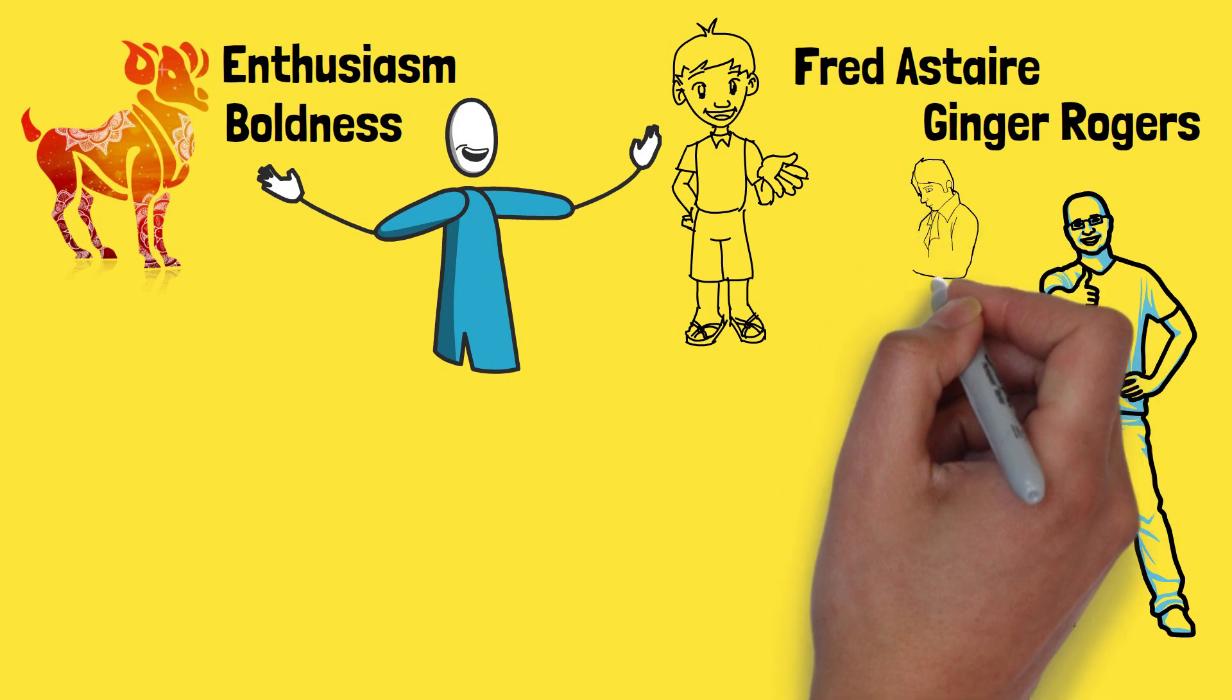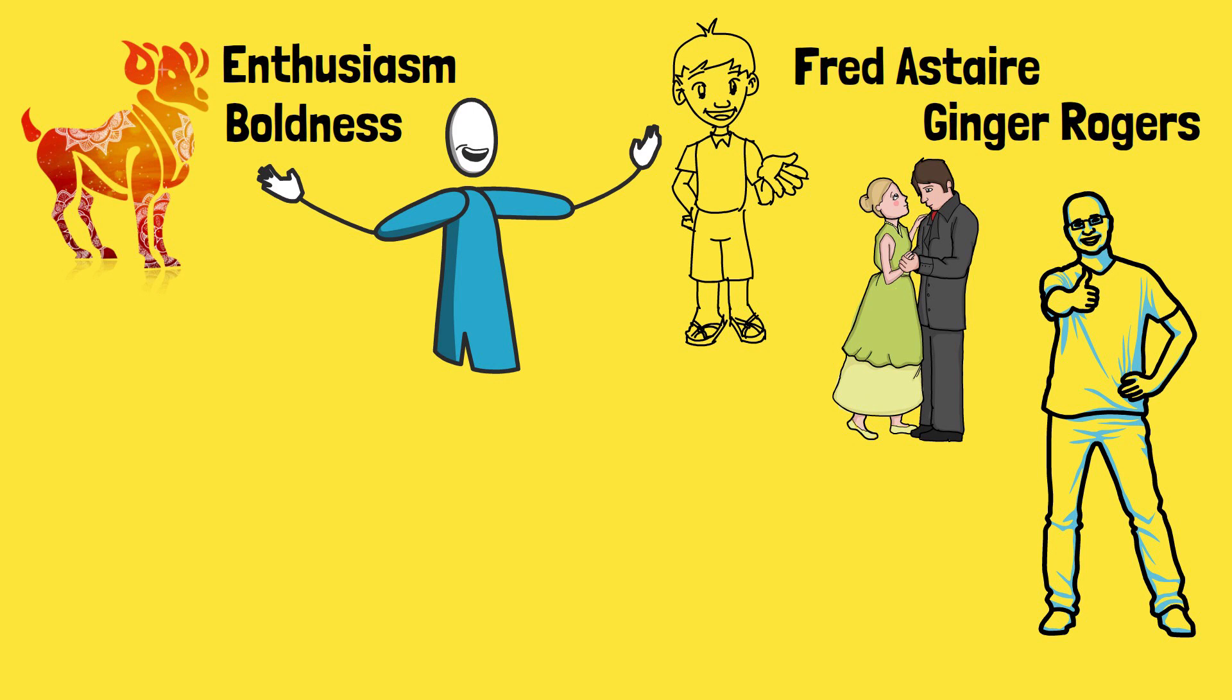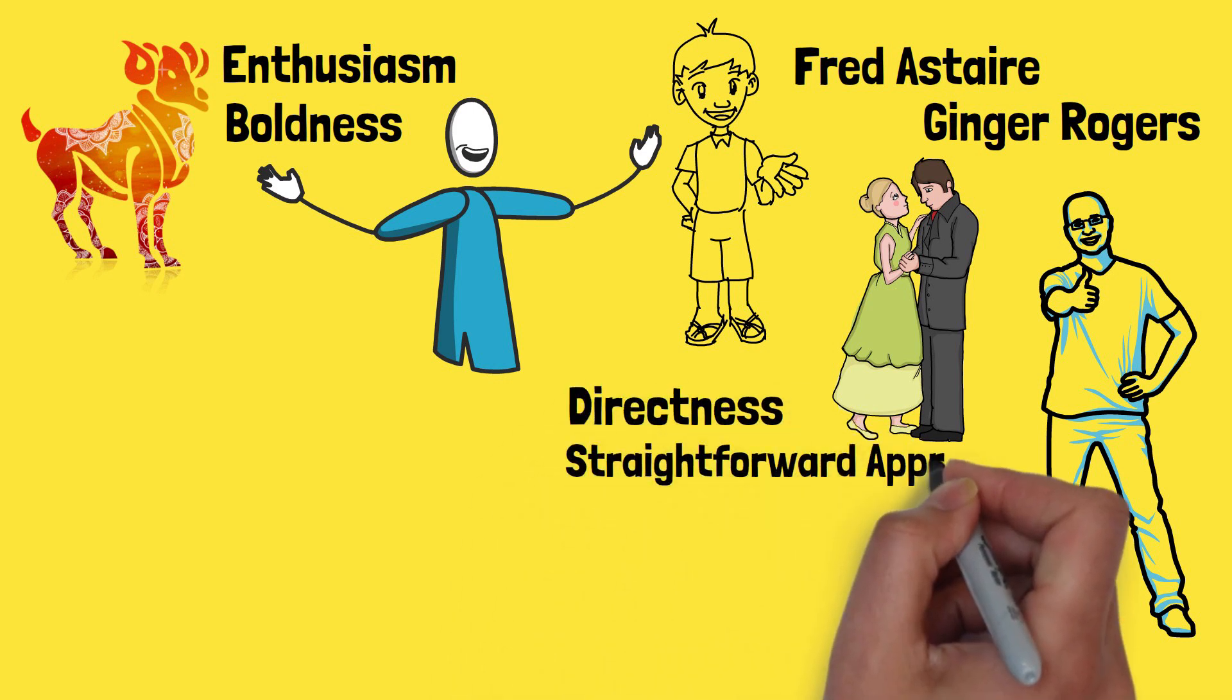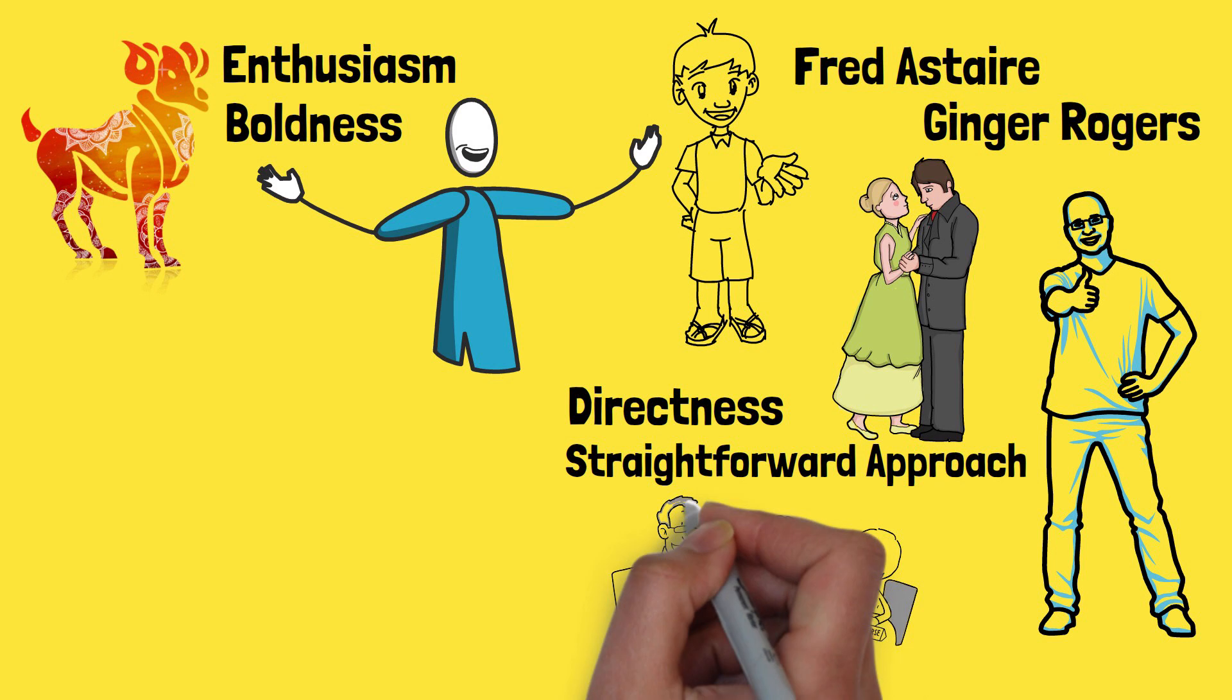Trust and communication are key to keeping the flames burning in the Aries-Virgo relationship. Aries' directness and straightforward approach inspire Virgo to speak up, while Virgo's analytical nature helps Aries understand that sometimes a little planning can go a long way.